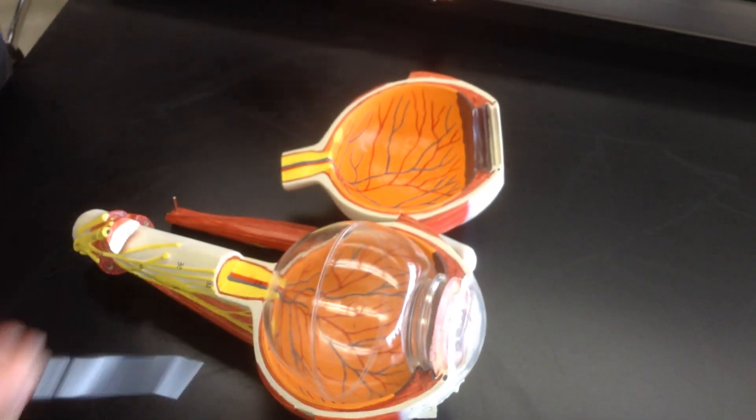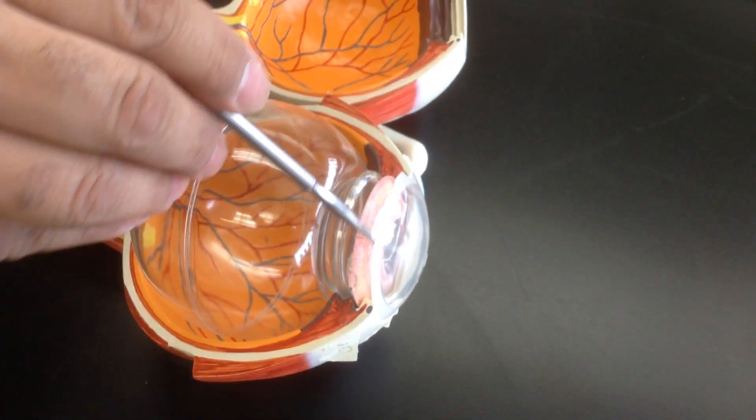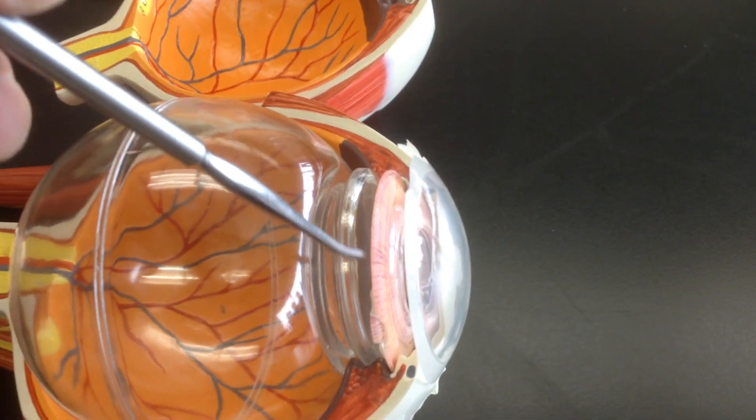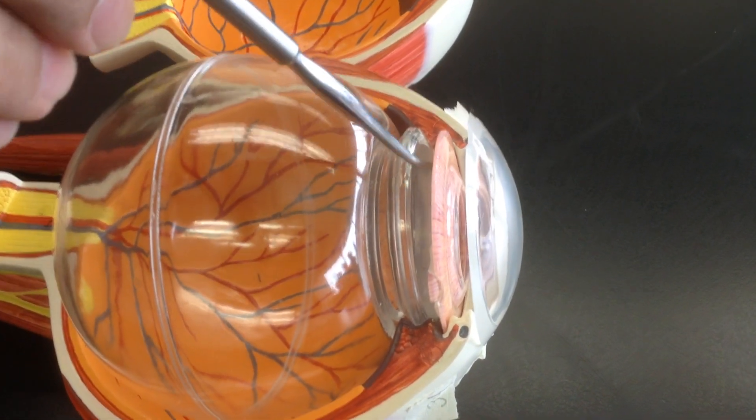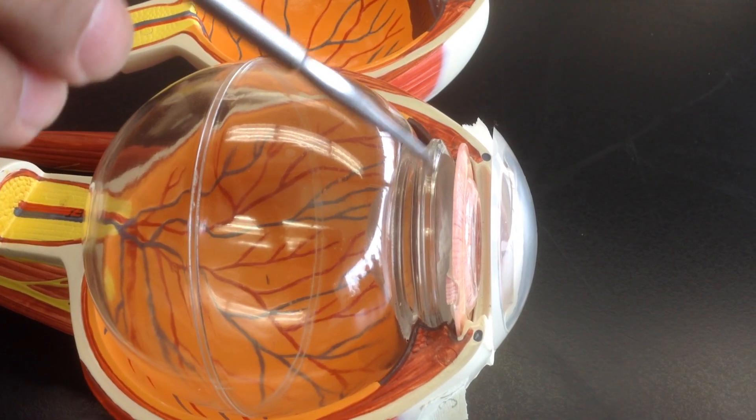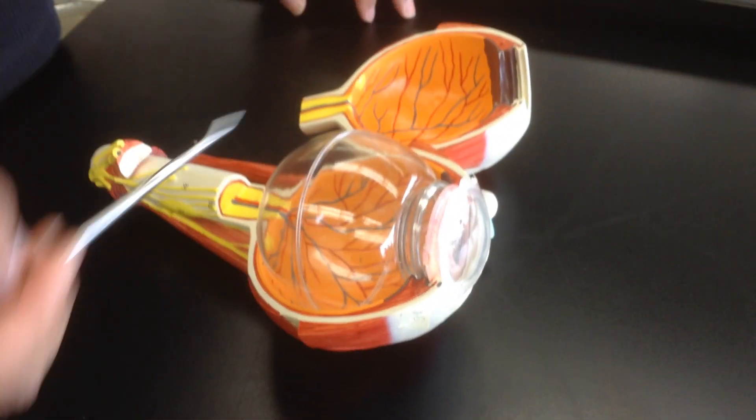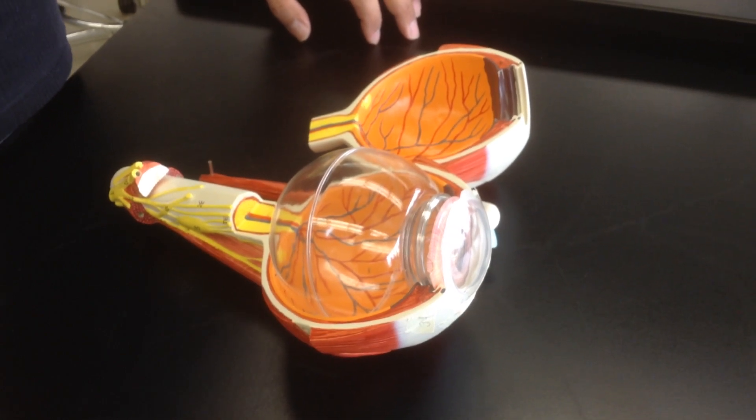We said that this section here was the anterior chamber of the anterior segment. Then, right behind the iris, this is the posterior segment of the anterior chamber. Then you have the lens, and from there, this big cavity is composed of the vitreous chamber.